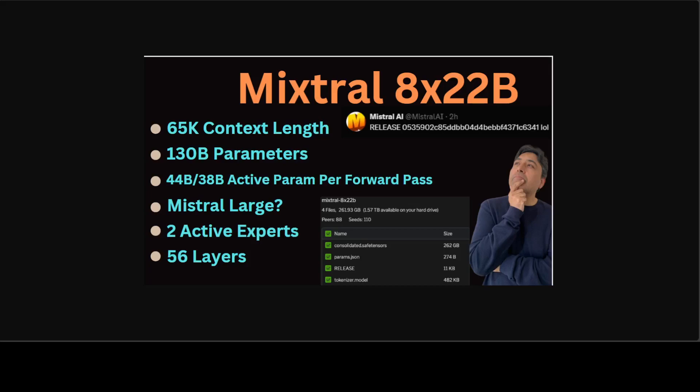As I mentioned earlier, this is a mixture of expert model. Mixture of experts refers to a framework where different expert models are combined or mixed together to collectively make predictions. We believe that this new model from Mistral has two active experts, meaning that during inference or generation, only two specific experts among the available set are actively used based on the input or context. This approach allows the model to dynamically select and leverage the expertise of different experts depending on the characteristics of the input data or the requirement of the task at hand.